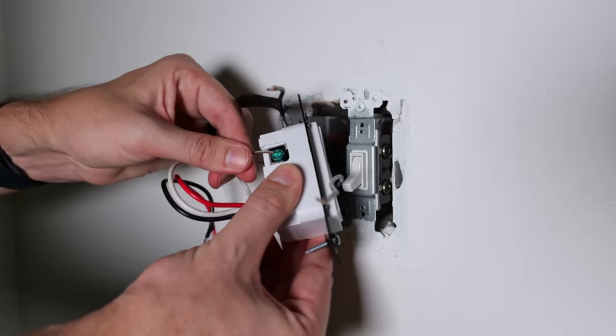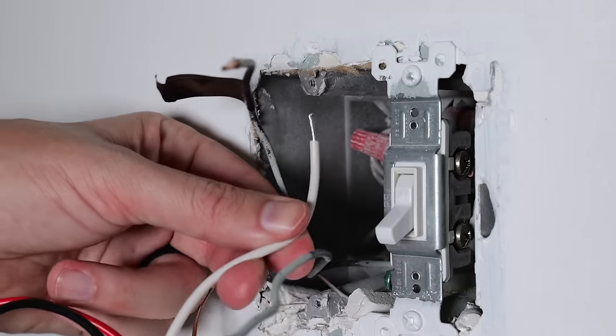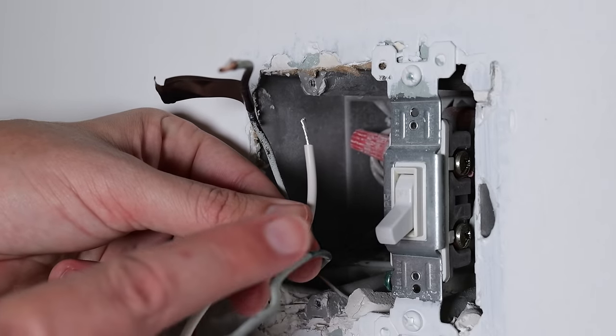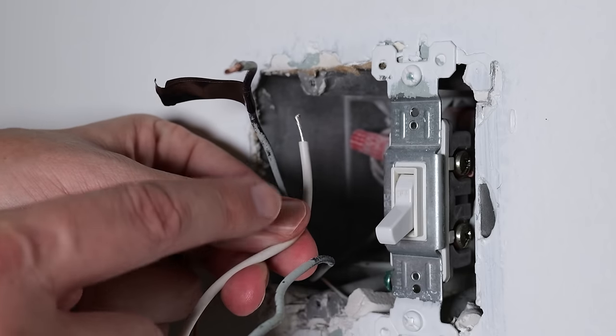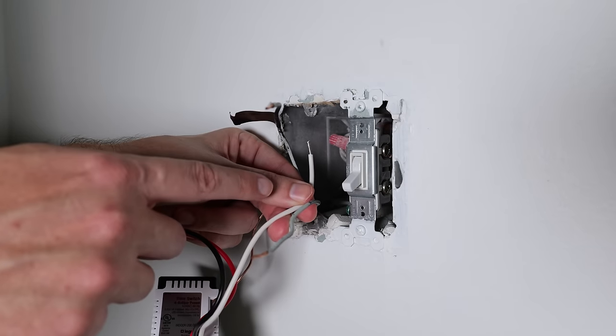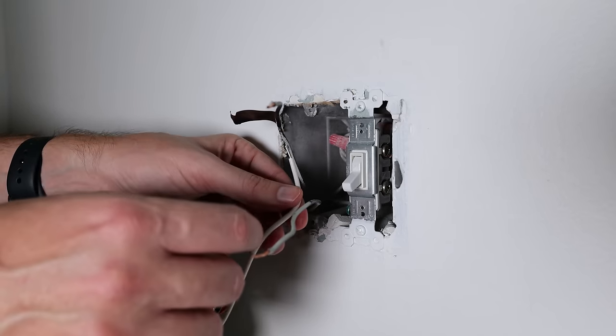Now that ground wire is on there nice and tight, the next wire we want to install is the white neutral wire. If you don't have a white neutral wire, you can go ahead and skip this step. For those of you without neutral wires, I'll get into that a little bit later.